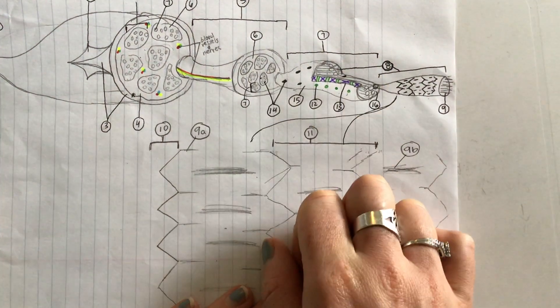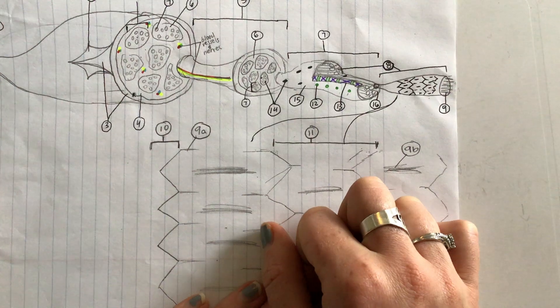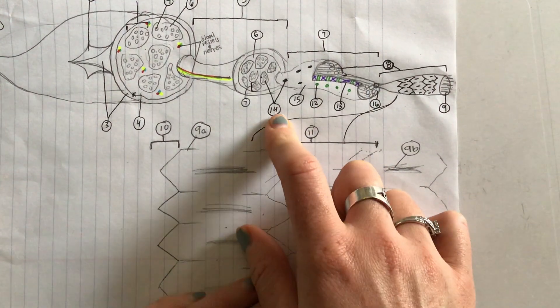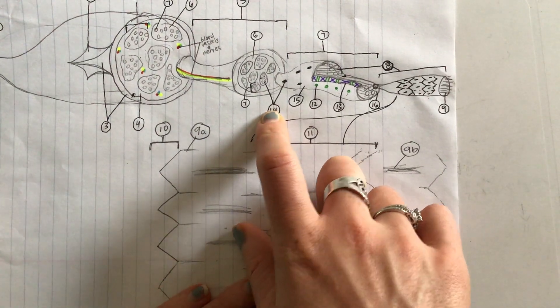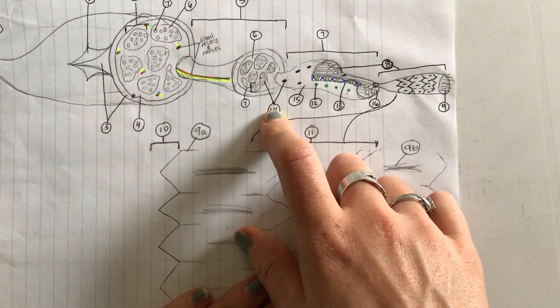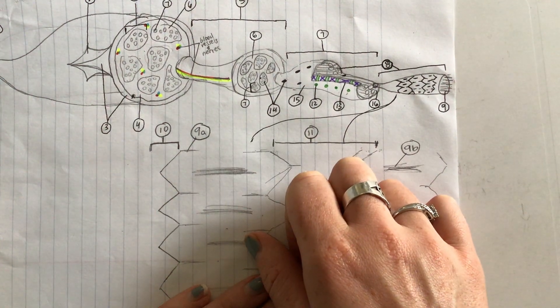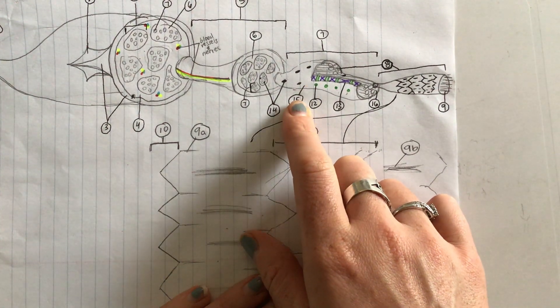Because number 7 is a muscle fiber or muscle cell, it has all the normal cell parts like number 14, which it has lots of. What is number 14? It is nuclei.